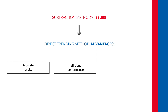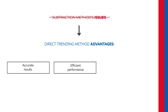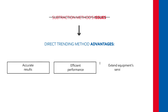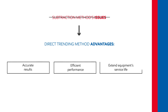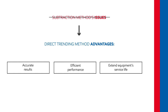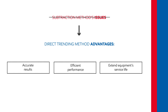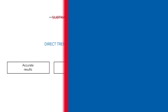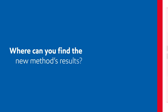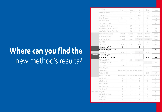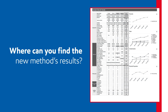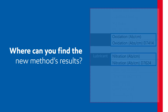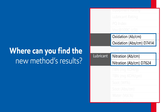By eliminating many of the subtraction method's issues, direct trending ensures accurate results of the oil analysis. This will help you perform more efficiently and extend your equipment service life. You will find the results of the new method on a new line in the test reports.